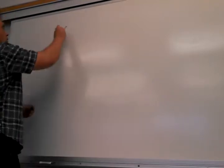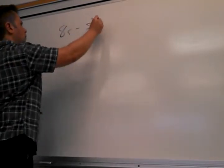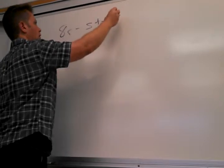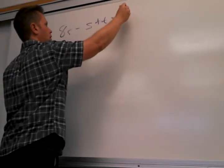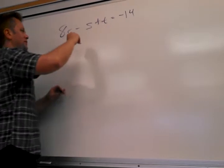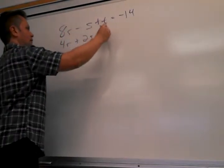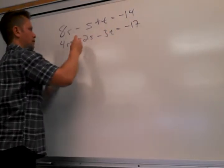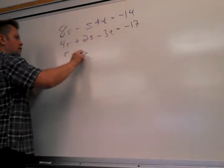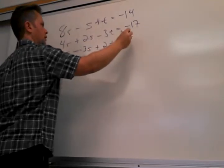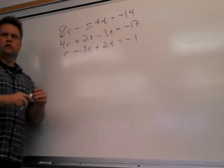So if you guys have no questions from homework, let's look at this one. The system is: 8r minus s plus t equals negative 14; 4r plus 2s minus 3t equals negative 17; r minus 3s plus 2t equals negative 1.